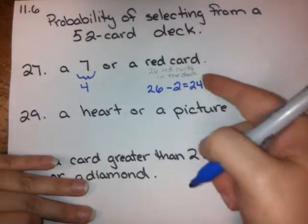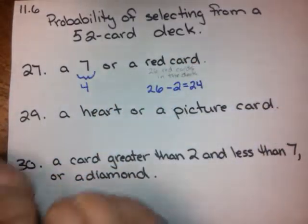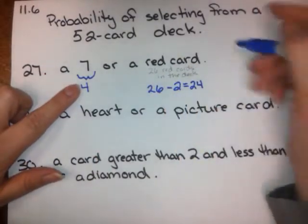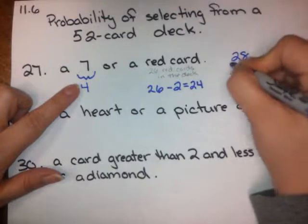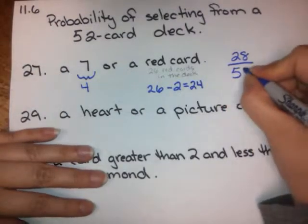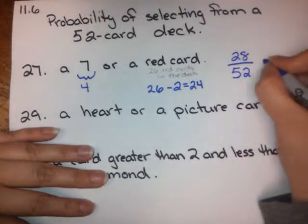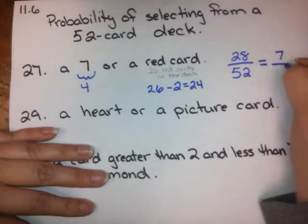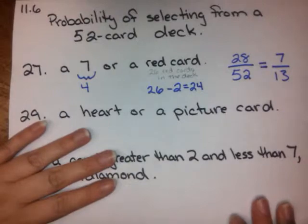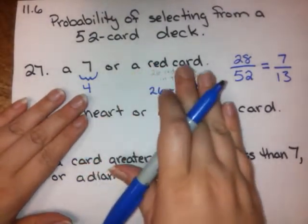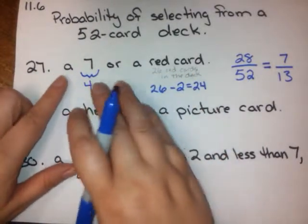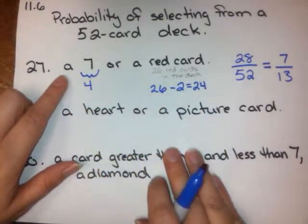There are 24 red cards that we hadn't counted already, so we don't get any duplicates. So 4 plus 24 gives us 28. Our sample space is that full 52-card deck. 28 out of 52 simplifies to 7 over 13. So when we have an 'or' and there might be duplicates, we need to make sure that if we've counted something here, we don't count it again.